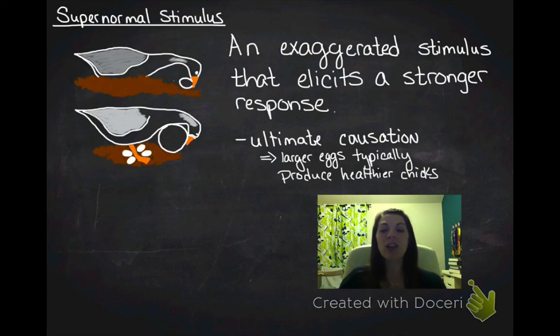Well, the ultimate causation, the ultimate evolutionary response underlying that behavior is that larger eggs in nature typically produce healthier chicks. When you look at scientific studies that measure the eggs and measure the survivorship of the chicks, you can see that larger eggs produce healthier chicks.